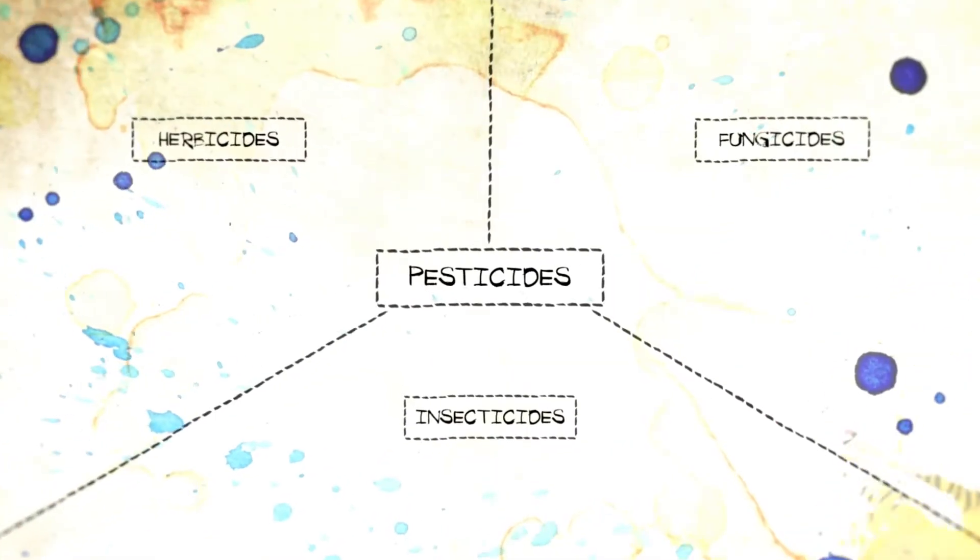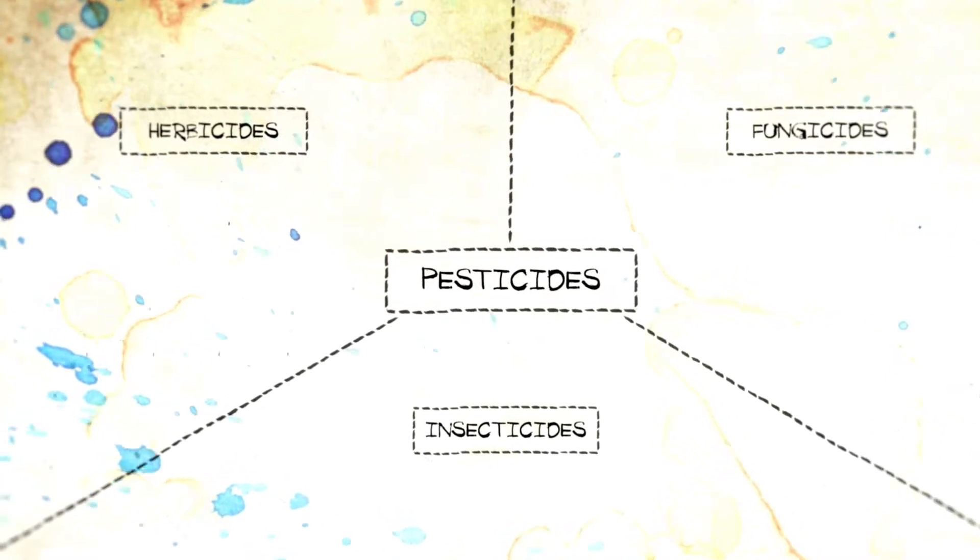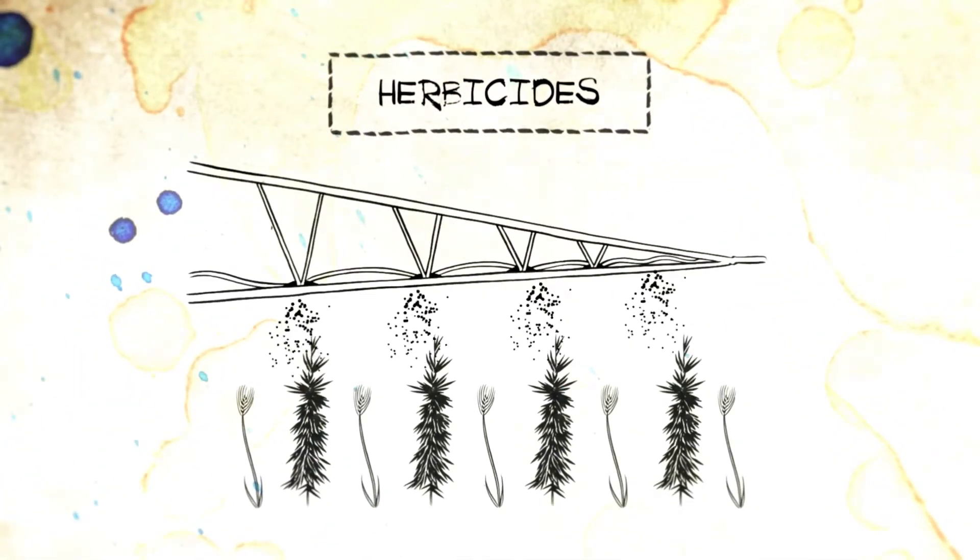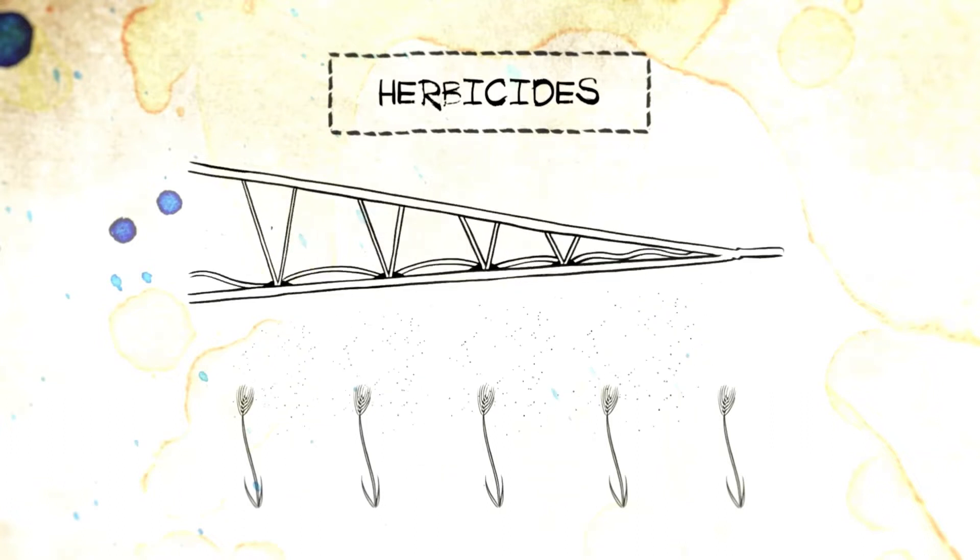There are three main types of pesticides used to protect crops. Herbicides eliminate weeds that are harmful to crops because they compete with the crop plants for rain, sunlight, nutrients and space.